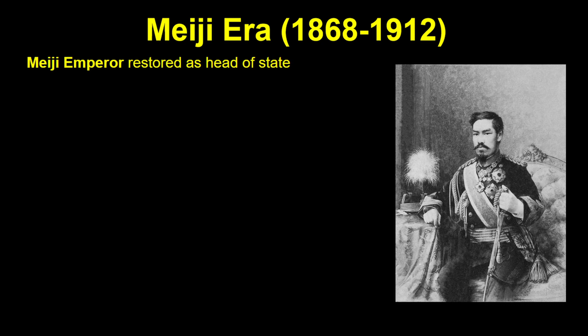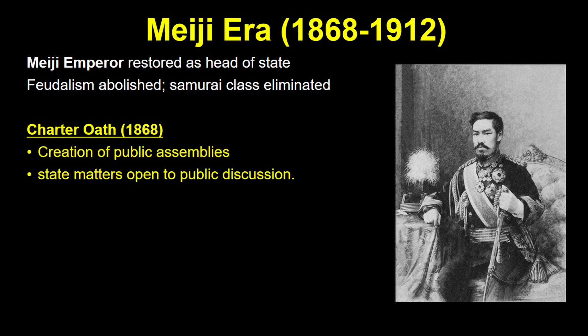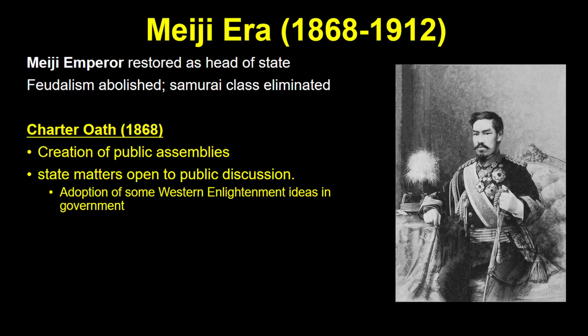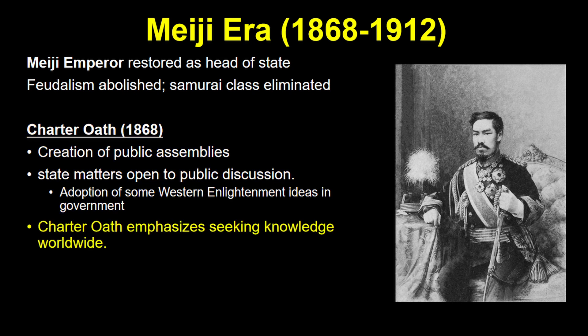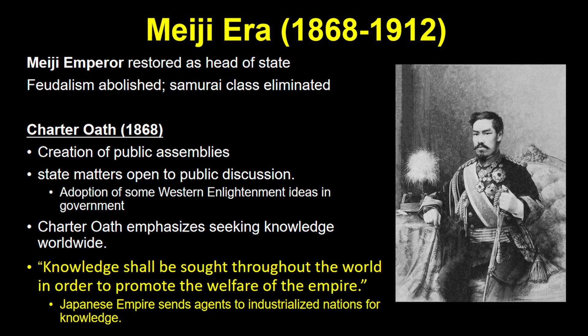The emperor was restored as an actual head of state, feudalism was gone, and the samurai class was abolished. The Meiji emperor himself issued the Charter Oath, which stated that public assemblies would be created and all matters of the state would be subject to public discussion. The Japanese adopted many of the Western Enlightenment ideals in their government, in addition to seeking Western technology. The last sentence in the oath sums up their ambitions: 'Knowledge shall be sought throughout the world in order to promote the welfare of the empire.' The Japanese empire sent agents to all the industrialized nations seeking knowledge, just like Muhammad Ali did in Egypt.